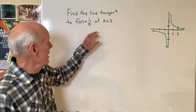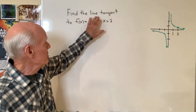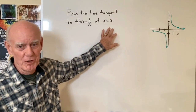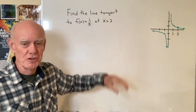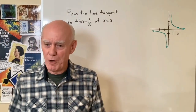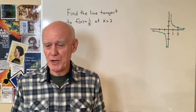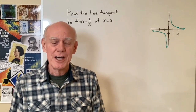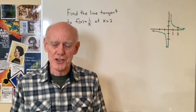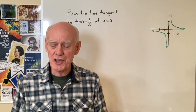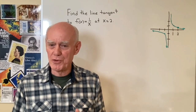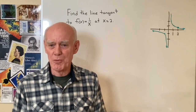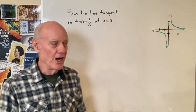In this problem, we want to find the equation of the line tangent to this graph at the point x equal 2, and we want to use the definition for the derivative of a function at a specific point. So if we're going to find the equation of the line tangent, we're going to need two things: we're going to need the slope of the line, and we're going to need one point on the line.